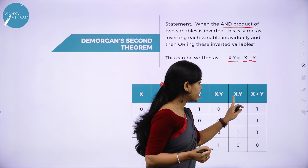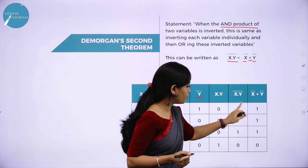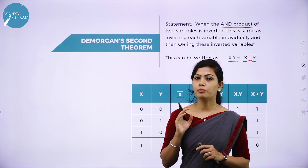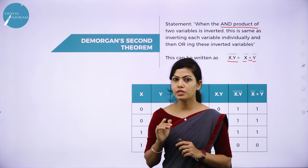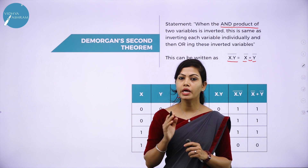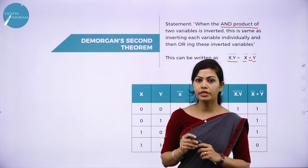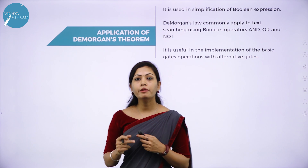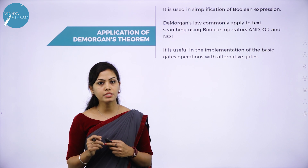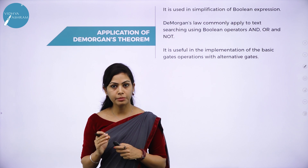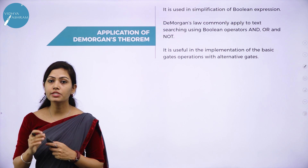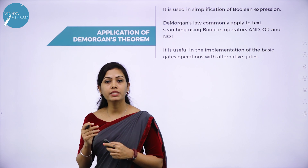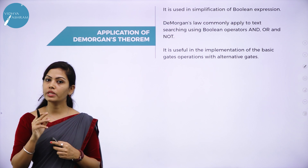Observe columns (x·y)̄ and x̄ + ȳ — both are identical, hence it is verified. De Morgan's first theorem is (x + y)̄ = x̄·ȳ and De Morgan's second theorem is (x·y)̄ = x̄ + ȳ. These are used in simplification of Boolean expressions and commonly applied to text searching using Boolean operators AND, OR, NOT, and useful in implementing basic gate operations with alternative gates.